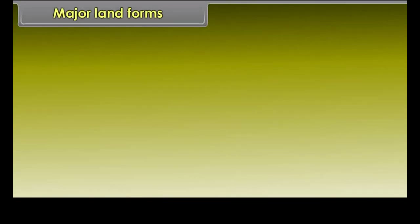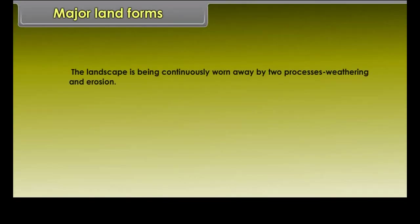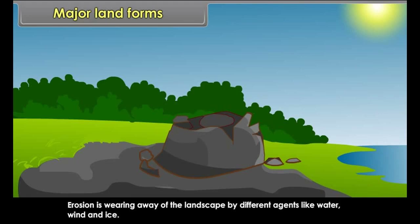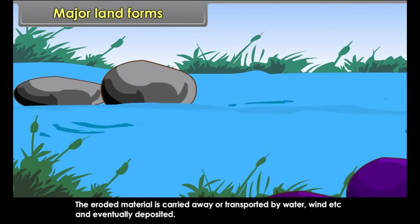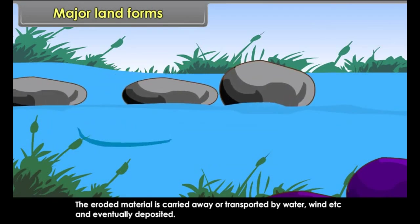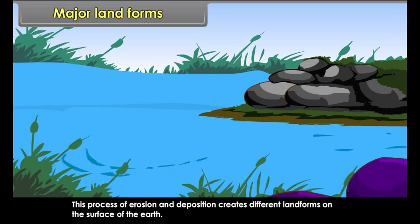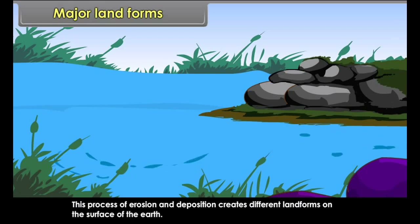The landscape is being continuously worn away by two processes: weathering and erosion. Weathering is the breaking up of rocks on the earth's surface. Erosion is the wearing away of the landscape by different agents like water, wind and ice. The eroded material is carried away or transported by water, wind, etc., and eventually deposited. This process of erosion and deposition creates different landforms on the surface of the earth.